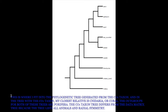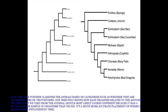The outgroups for both of these trees are Porifera. The CO1 taxon tree differs from the data matrix tree because the tree lists all animals and radial symmetry. Also, the tree further classifies the animals based on categories such as whether they are deuterostomes or protostomes. Our tree only shows how each organism relates to one another. The tree from the journal article most likely looked different because it had a much larger sample of organisms than we did, making it a much more accurate placement of where I belong in the phylogenetic tree.